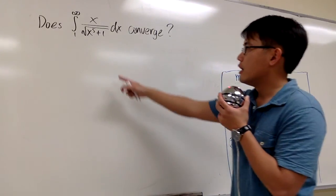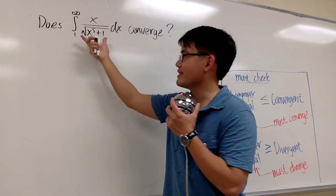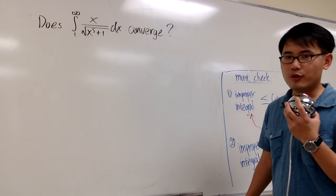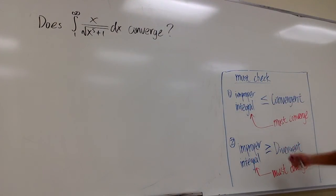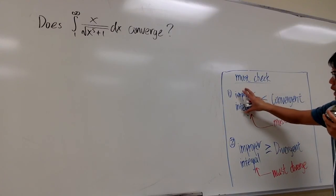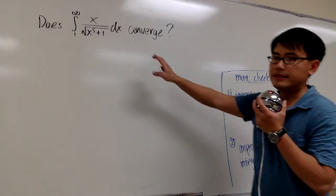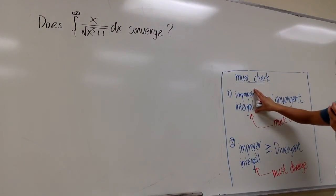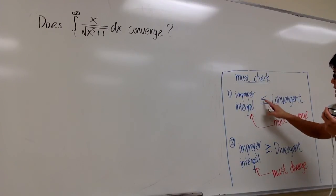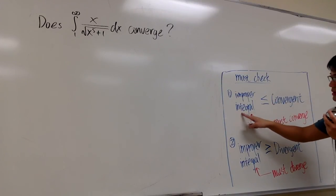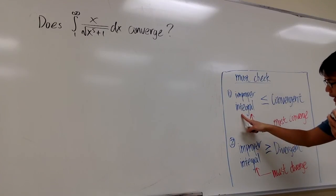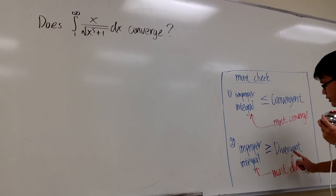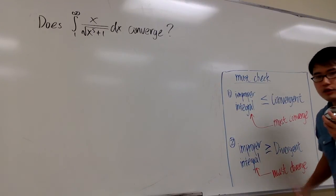Here is the idea. I cannot really integrate this from scratch, because that would be really hard or maybe it's not possible. We would like to use the comparison theorem. The idea is that you have an improper integral and you want to make a decision about whether it converges or not. We have two situations. First, if we can show that an improper integral is less than or equal to a convergent one that we know, then that integral has to converge as well. On the other hand, if we show that it is bigger than or equal to a divergent one, that would imply it diverges as well.